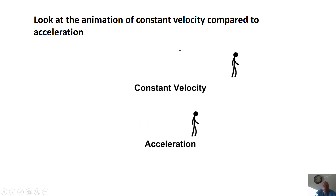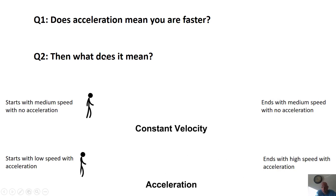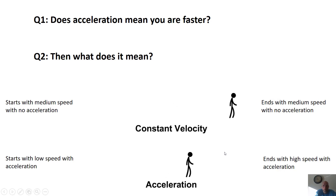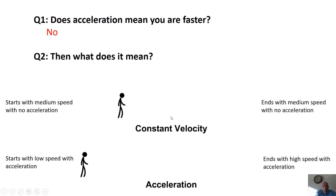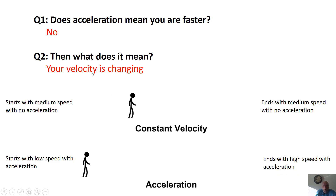Look at the animations of constant velocity compared to acceleration. Does acceleration mean you are faster? Maybe it does, maybe it doesn't. The guy on the bottom who is accelerating is not faster the whole time — he starts slower and the one on top is going faster at the beginning. What acceleration means is that your velocity is changing. If you have a positive acceleration, you're getting faster; if you have a negative acceleration, you're getting slower.